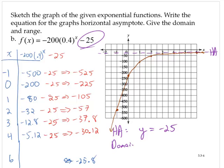Domain is, again, all real numbers. Range. We would define the range in this case as y is less than negative 25. Notice how the asymptote and the range are related.